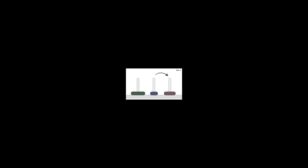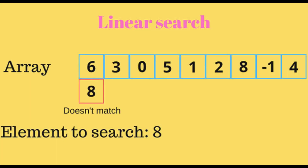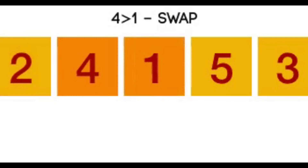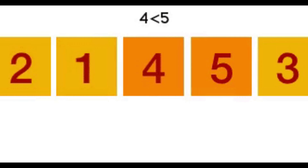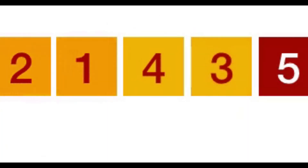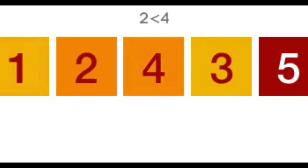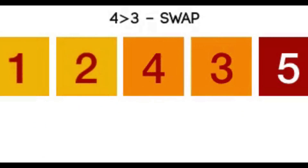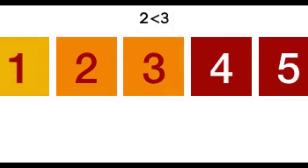Searching means finding an element within a data structure. Sorting is the process of arranging the data structure in a specific order — arranging elements in a specific order within the data structure is known as sorting.